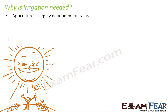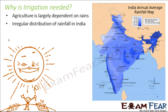Just imagine the farmer puts in all the efforts, but when the time for irrigation comes, there is no rain — all his efforts will go to waste. Also, in India there is an irregular distribution of rainfall: certain regions receive heavy rainfall throughout the year while others receive very little. If agriculture is completely dependent on rain, locations that don't get enough rain will find cultivation of crops very difficult. That is why, keeping these constraints in mind, came the concept of irrigation — so we are not entirely dependent on rainfall and can artificially apply water to the fields whenever needed.